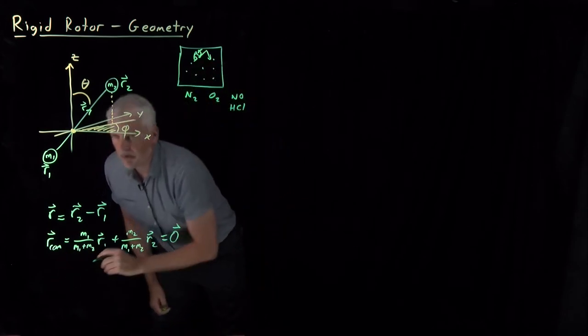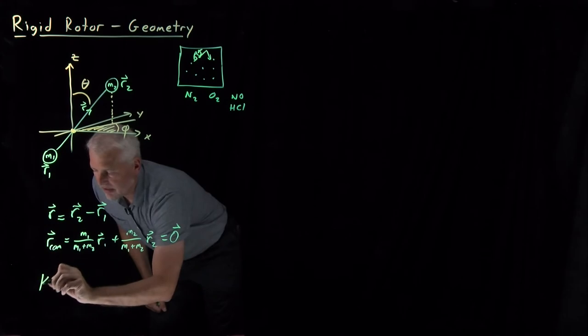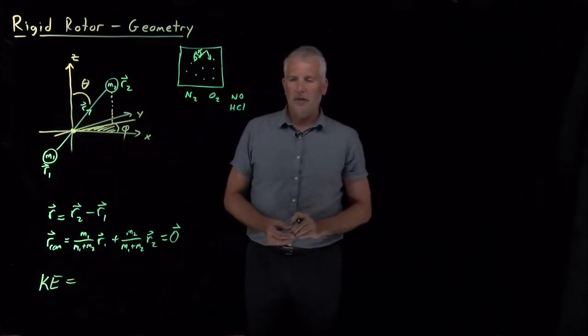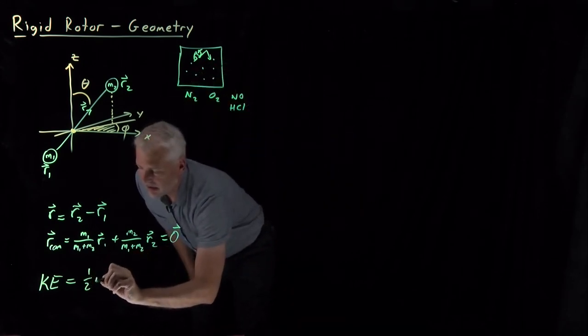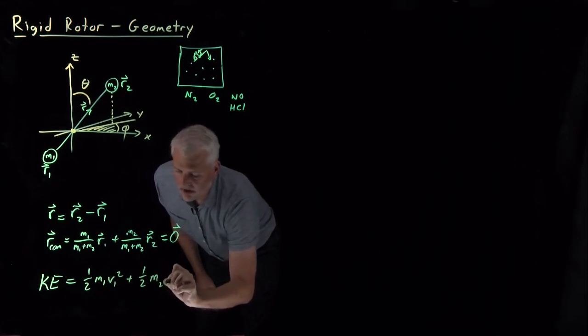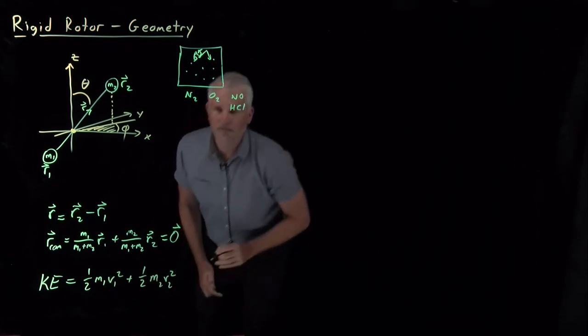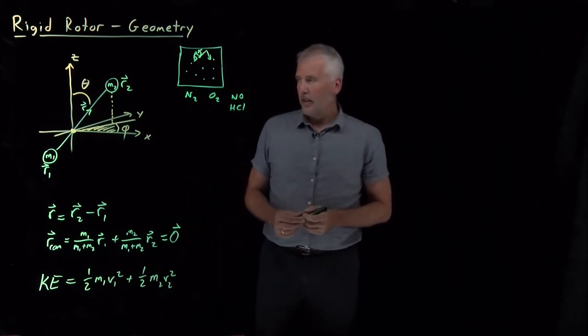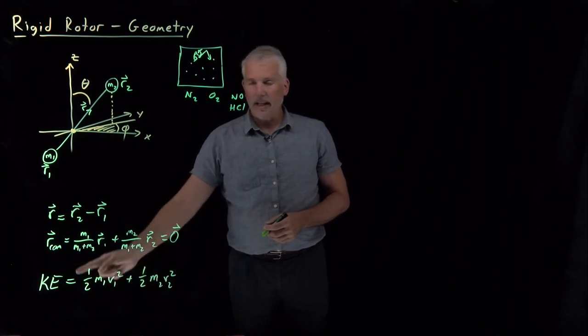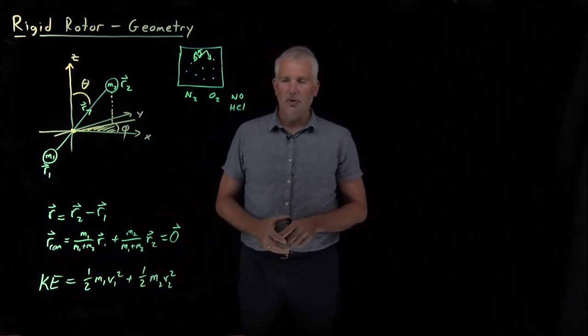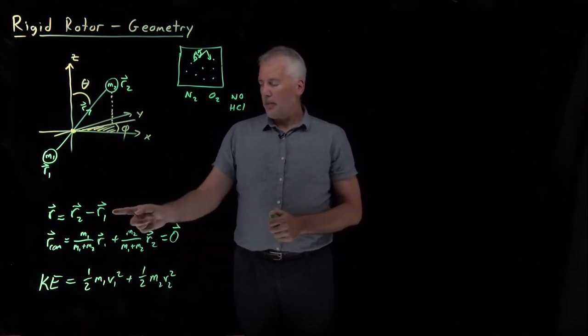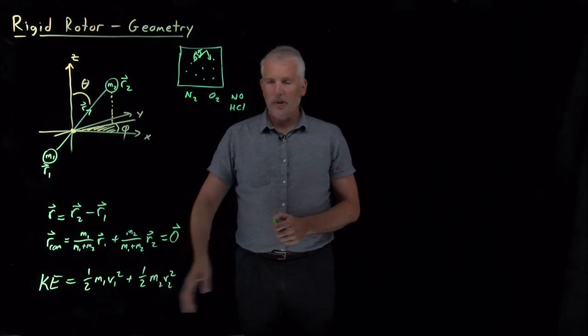With that information, to start getting set up to solve Schrodinger's equation, I can say the energy of this molecule, if I want to talk about the kinetic energy of this molecule. Kinetic energy we're familiar with, that's 1/2 mv squared. Because this molecule has two atoms in it, this atom has some kinetic energy, this atom has some kinetic energy. The total kinetic energy is the kinetic energy of atom 1 combined with the kinetic energy of atom 2.